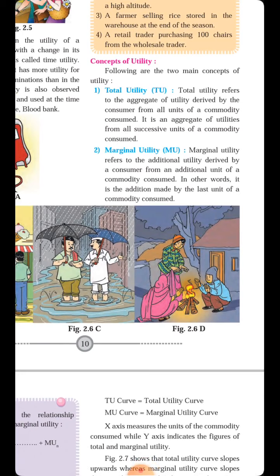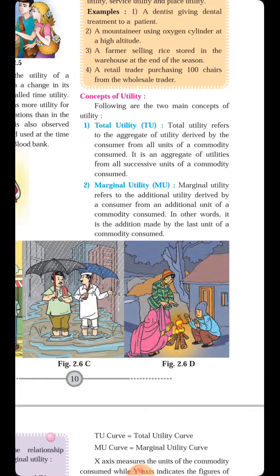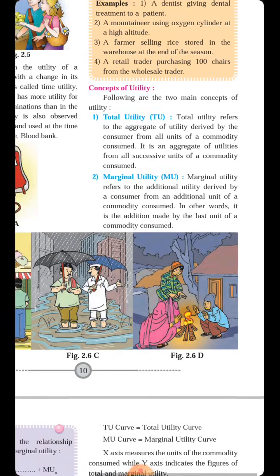Marginal Utility is derived by a consumer from an additional unit of a commodity consumed. In other words, it is the addition made by the last unit of a commodity. Whatever additional benefit we receive from the last unit or last commodity we are consuming — that is called Marginal Utility.